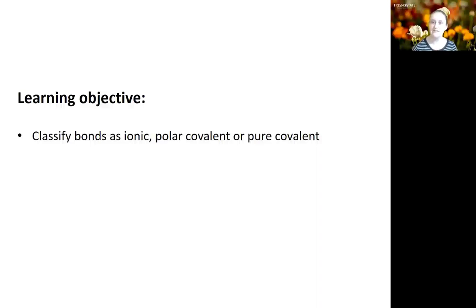We've already talked a little bit about these in previous modules, but we're going to focus in a lot more detail on the similarities and differences between chemical bonds. At the end of this video you should be able to classify them as ionic, pure covalent, or polar covalent.